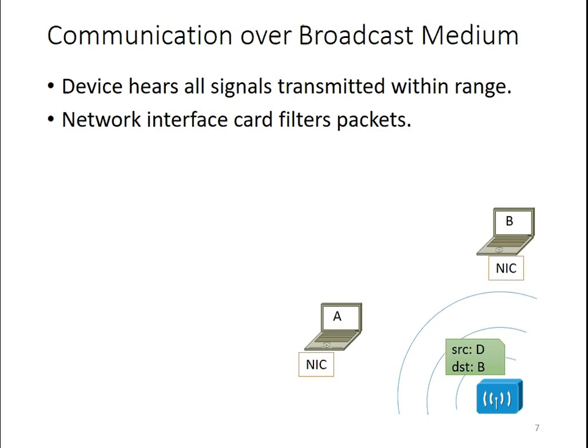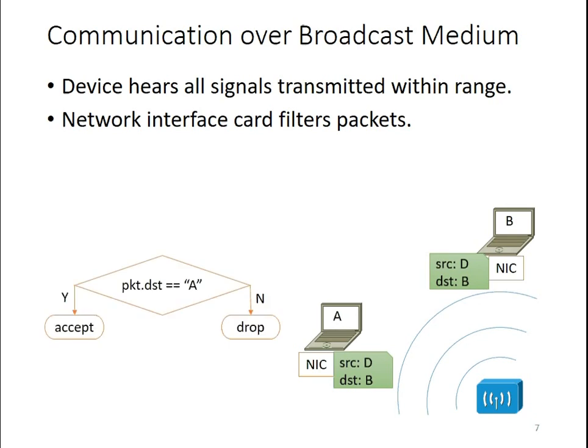In this wireless network example, the access point sends a packet whose destination is B. Since the wireless network is a broadcast medium, both A and B will receive this packet. In their network interface cards, they check whether the destination address equals the host's own address. A sees the destination is not A, so it drops the packet in hardware. B sees the destination is B, so B delivers the packet for software processing.